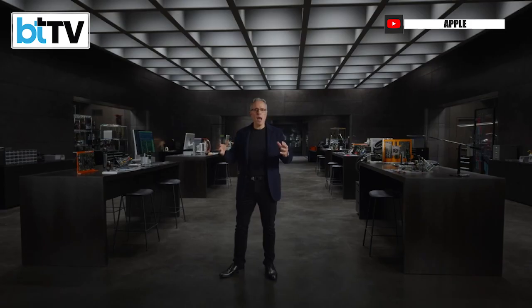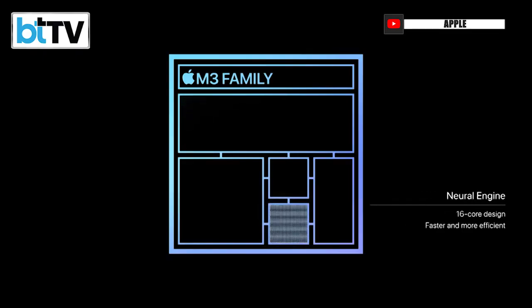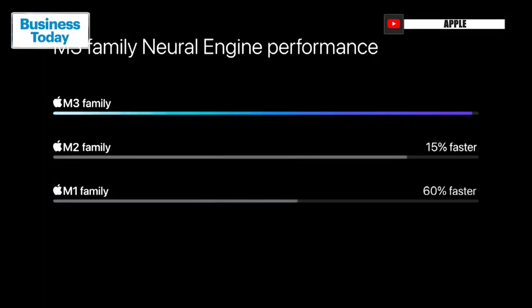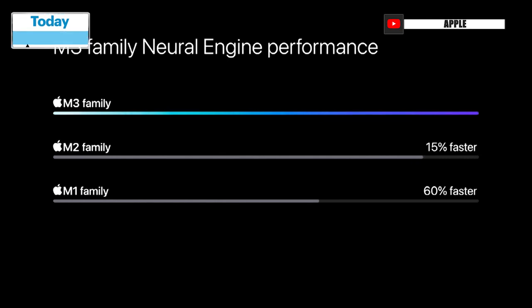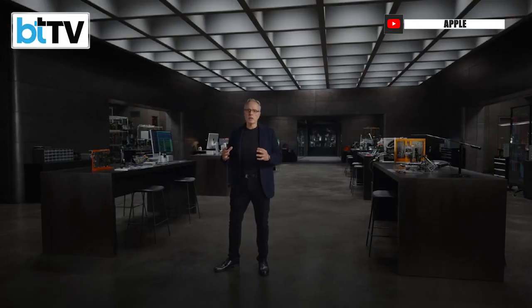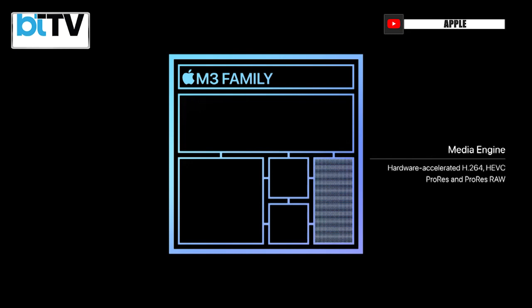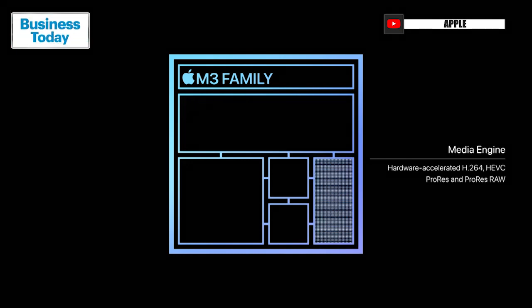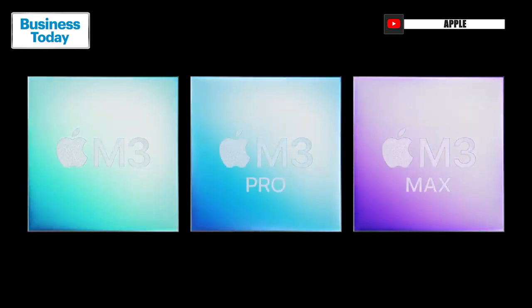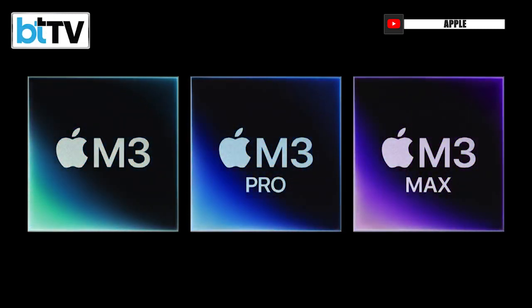M3, M3 Pro, and M3 Max also have a faster and more efficient neural engine — a breathtaking 60% faster than the M1 family — making AI even faster while keeping data on device to preserve privacy. The M3 family also has our advanced media engine for hardware acceleration of the most popular video codecs, and now it includes support for AV1, enabling power-efficient playback of streaming video from YouTube, Netflix, and other services.